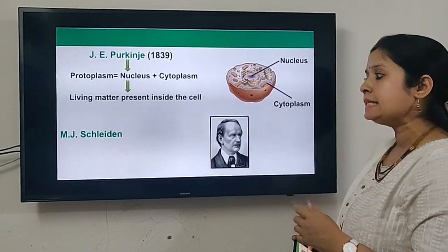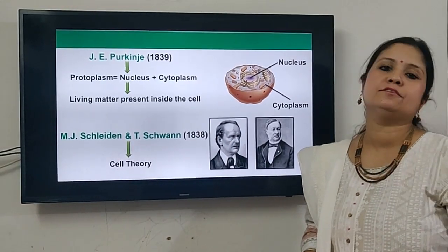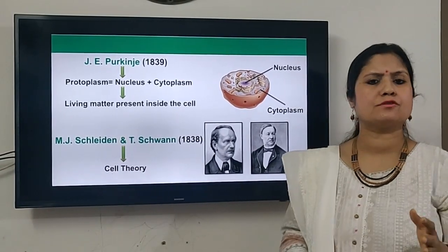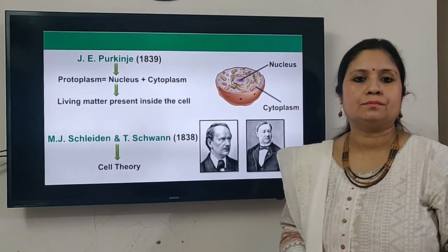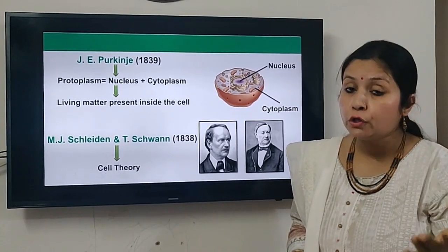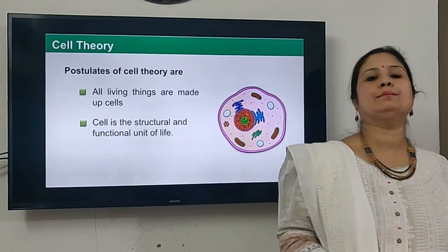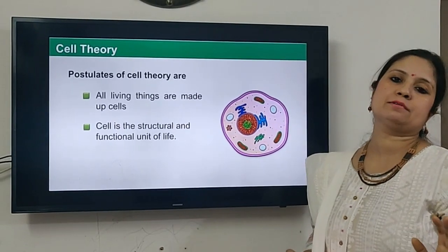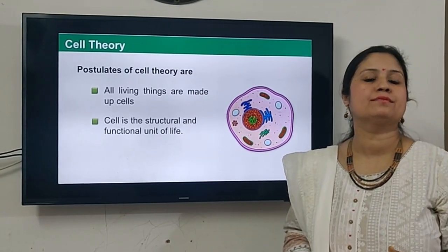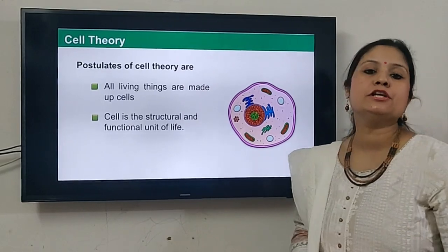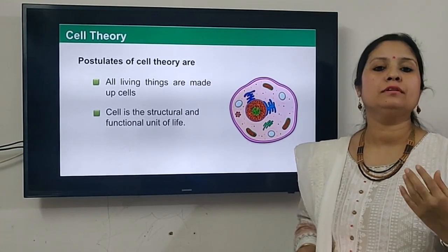In 1838, Schleiden and Schwann came up with the concept of cell theory. They studied various types of plants and animals and concluded that all living organisms are made up of cells. They were the first scientists to discuss in detail how living organisms are made up of cells, and they gave the definition that cell is the structural and functional unit of life.